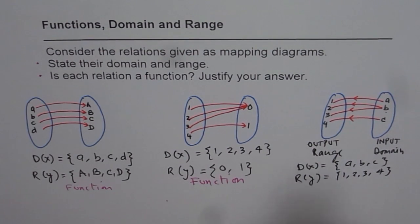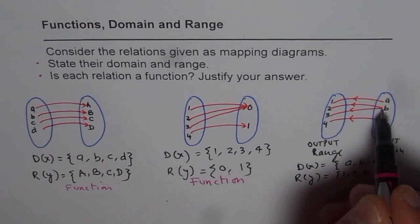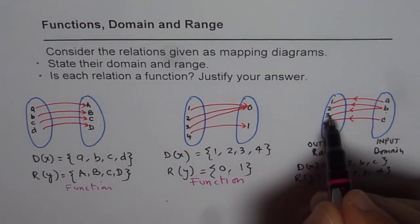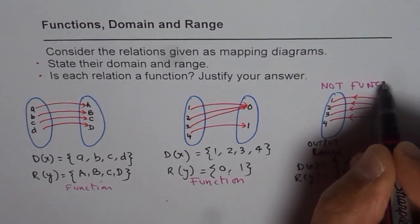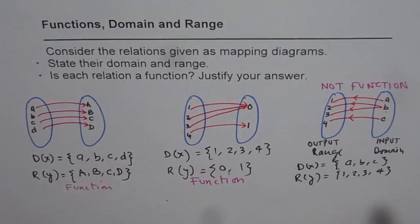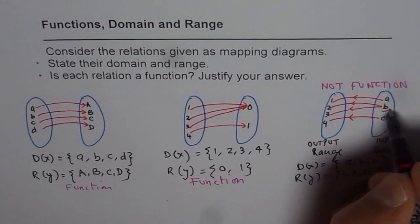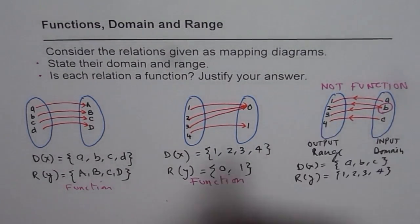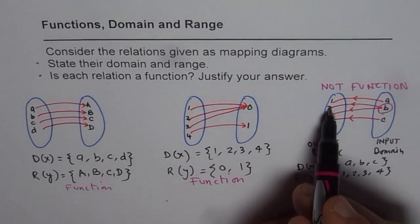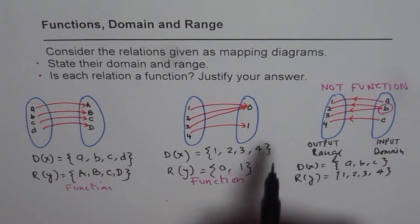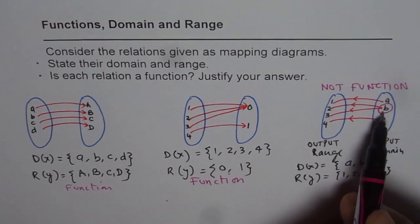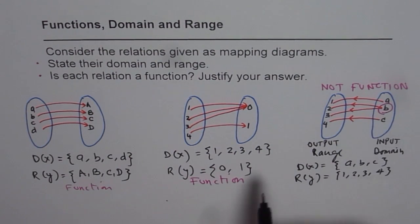Now is it a function or not? This is what you need to figure out. Since b is associated with two values, we have b to 2 and b to 3. Therefore it is not a function. Do you see that? This one is not a function since b is associated with two values, two elements. So two elements in range correspond to one element in domain, and therefore it is not a function.